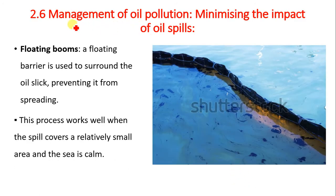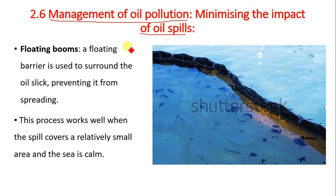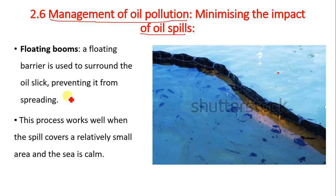For strategies to minimize the impact of oil spill once pollution has occurred, the first method is floating booms — a floating barrier used to surround the oil slick and prevent it from spreading further. This process works well when the spill covers a relatively small area and the sea is quite calm.